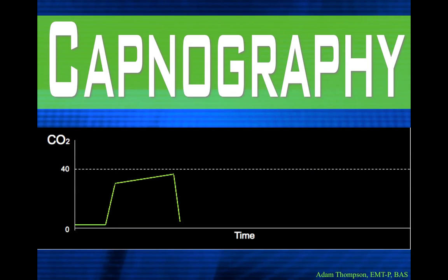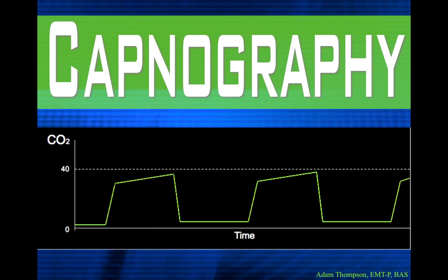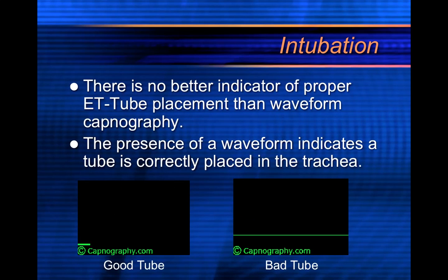Welcome back to the capnography tutorial. In part one we discussed anatomy and physiology and how we get carbon dioxide readings. In part two we discussed the difference between oxygenation and ventilation and the different things we can measure from end-tidal CO2. In part three, we are going to discuss some of the capnography values that might become alarming, and what to do if you have an intubated patient with a bad capnography value.